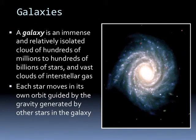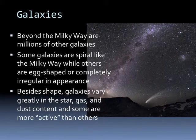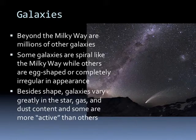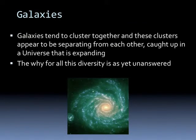A galaxy is an immense and relatively isolated cloud of hundreds of millions to hundreds of billions of stars and vast amounts of interstellar gas. Each star moves in its own orbit, guided by the gravity generated by the other stars in the galaxy. Beyond the Milky Way are millions, if not billions, of other galaxies. Some are spiral like the Milky Way, while others are egg-shaped or completely irregular. Galaxies vary greatly in star, gas, and dust content, and some are more active than others. Galaxies tend to cluster together, and these clusters appear to be separating from each other, caught up in a universe that is expanding. The why for all this diversity is as yet unanswered.